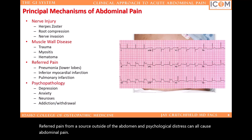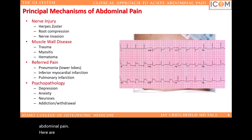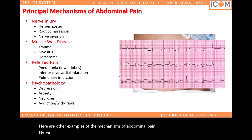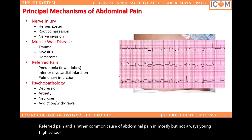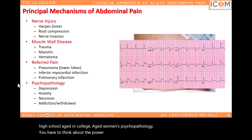Here are other examples of the mechanisms of abdominal pain: nerve irritation, trauma like a rectus sheath hematoma, referred pain, and a rather common cause of abdominal pain in mostly — but not always — young high school and college aged women: psychopathology. You have to think about the power of the mind over the body because it's a very real entity.